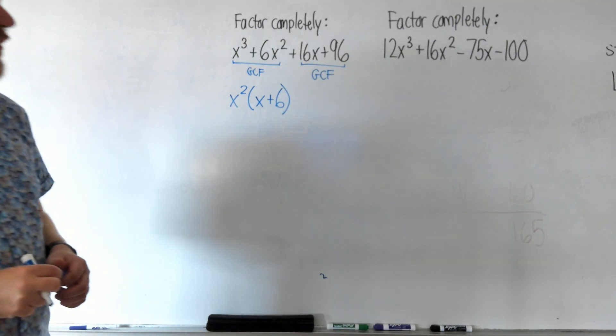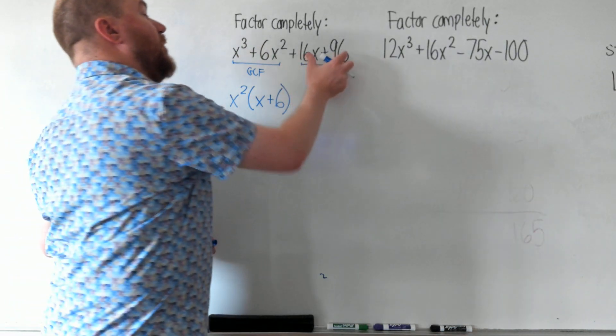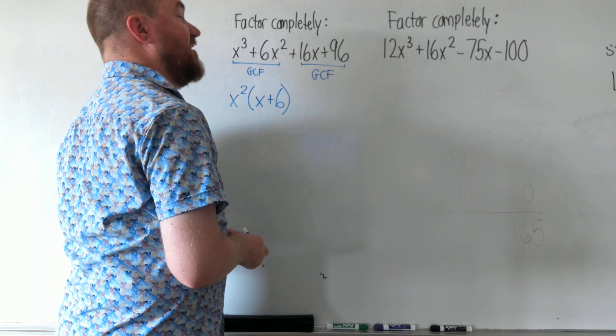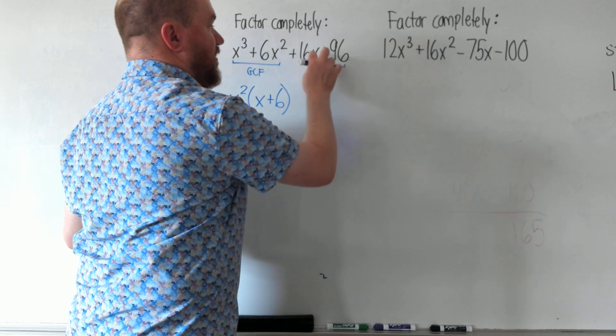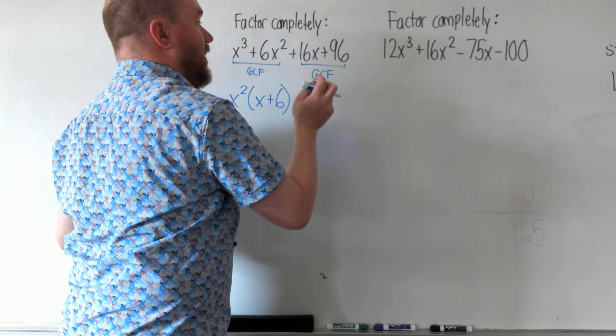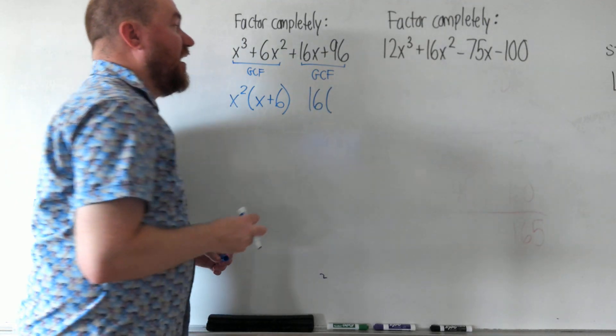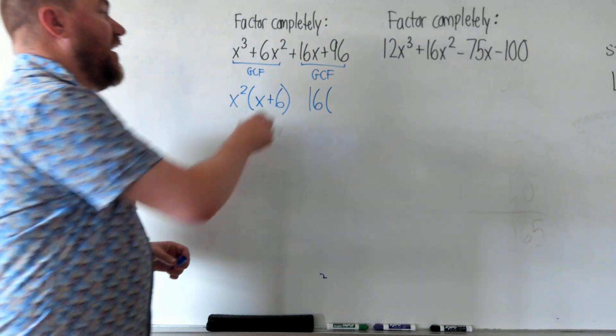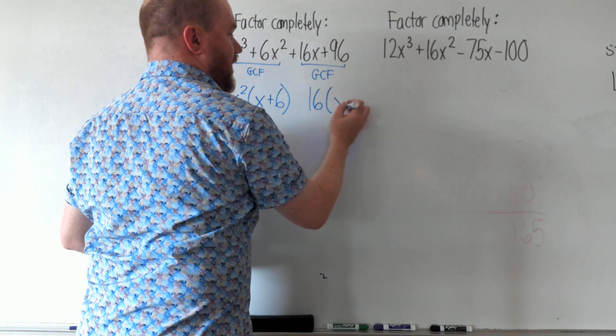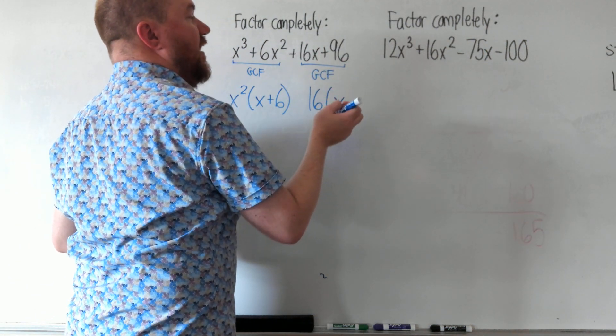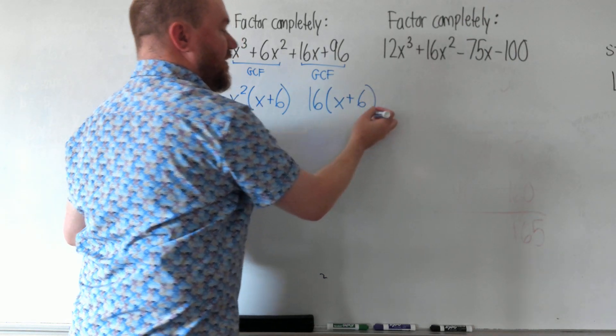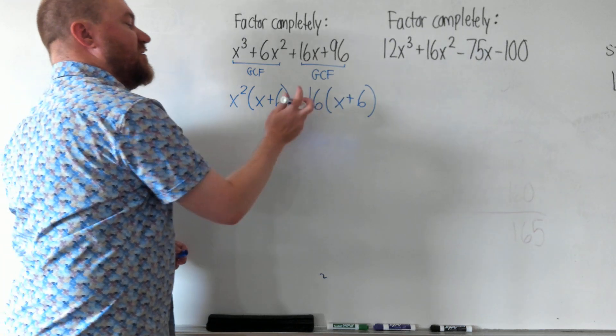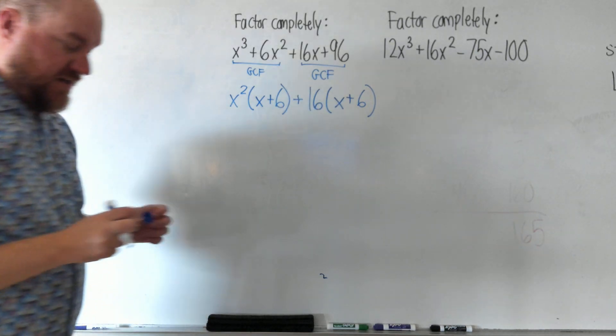Now let's GCF the second two terms. Both of those numbers are divisible by 16. So let's GCF 16 out and see what's left over. When we divide by 16, we get x, and 96 divided by 16 we get 6. That's where I got the 6 from earlier. And because that's a positive, let's put a plus sign in there.